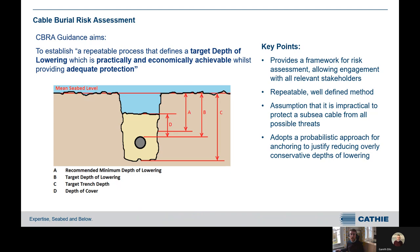Starting with the CEBRA — most people here will be relatively aware of it. It is a repeatable process to define a target depth of lowering which is practically and economically achievable while providing adequate protection. This is typically done in the cable design phase — how we will protect the cables throughout their lifetime and what we will aim to bury them by to achieve that protection. This is a framework using probabilistic approaches and other information for the hazards.